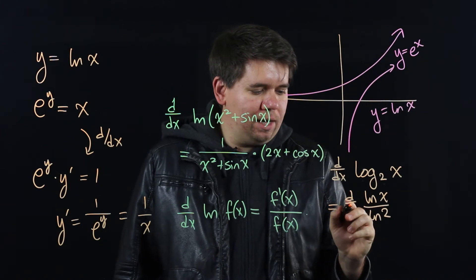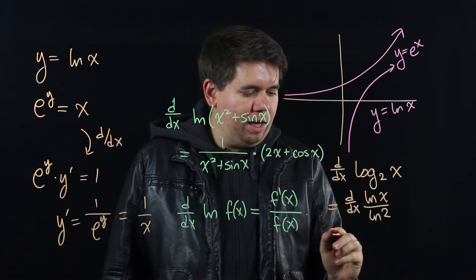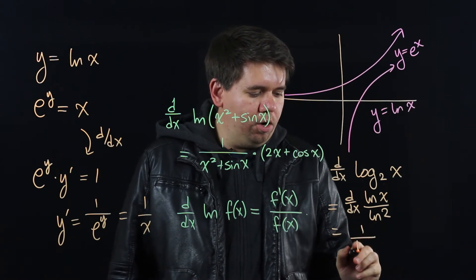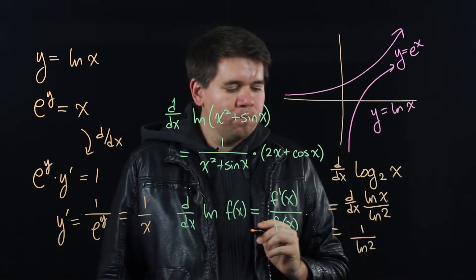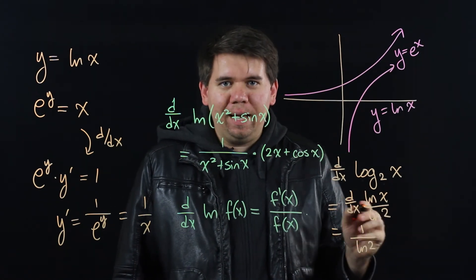And so we're really just calculating the derivative of ln of x with some constant term. That is, we have this constant 1 over ln of 2 out front, and we're multiplying that by the derivative of ln of x, which is just 1 over x.